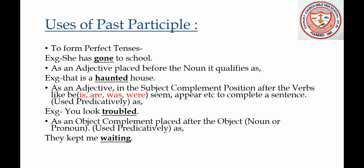Second, as an adjective placed before the noun it qualifies. Example: 'That is a haunted house.' In this sentence the word 'haunted' is an adjective which is placed right before the noun 'house,' and it is a past participle.